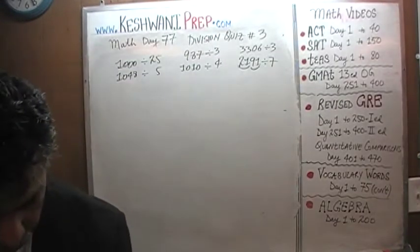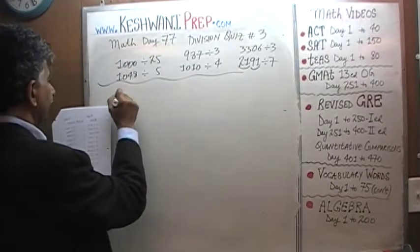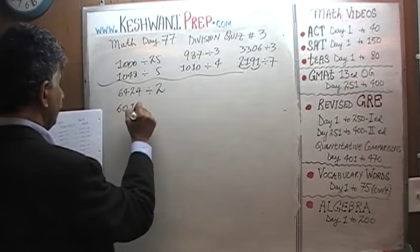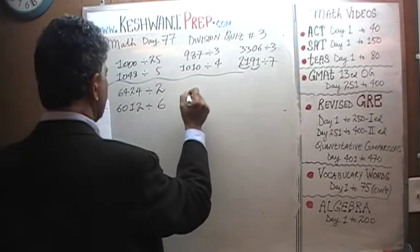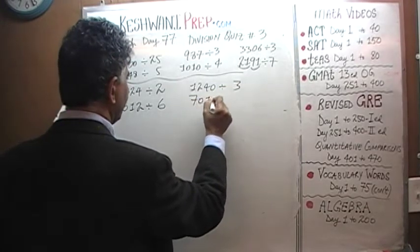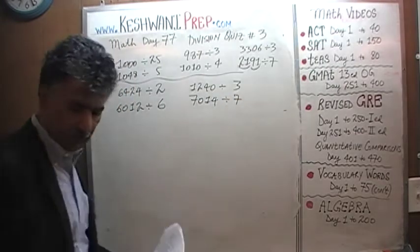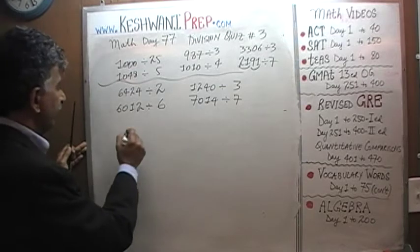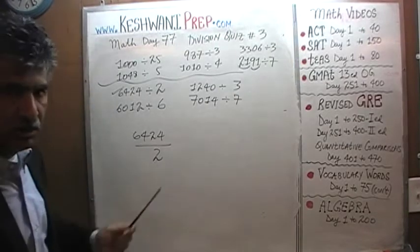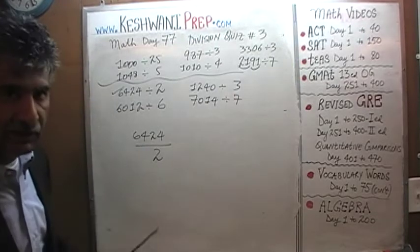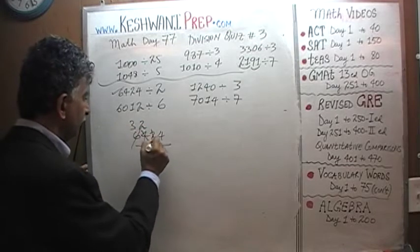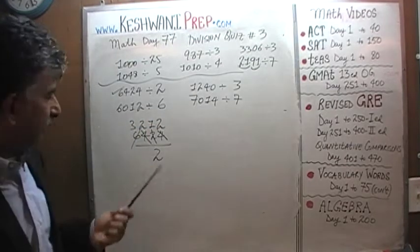Let's put up four more problems. 6,424 divided by 2; 6,012 divided by 6; 1,240 divided by 3; and 7,014 divided by 7. These four turn out to be very simple. The first one — 6,424 divided by 2 — is easy because each individual digit is an even number. So: 6 has three 2s, 4 has two 2s, 2 has one 2, and 4 has two 2s. The answer is 3,212.